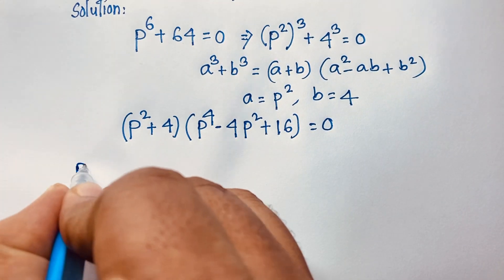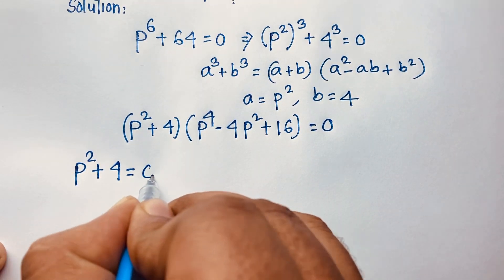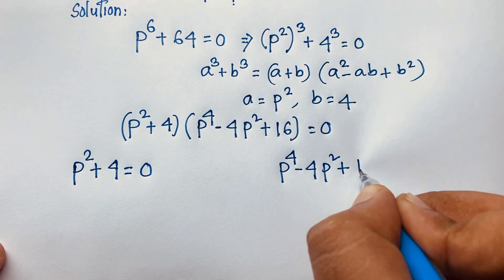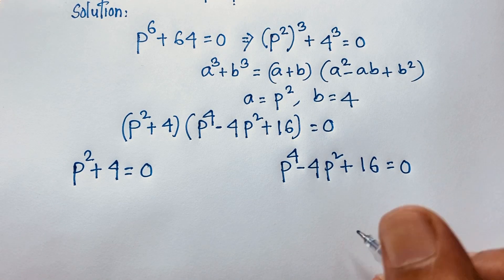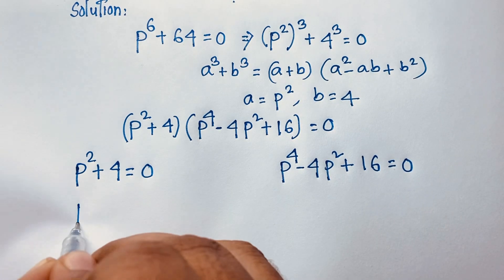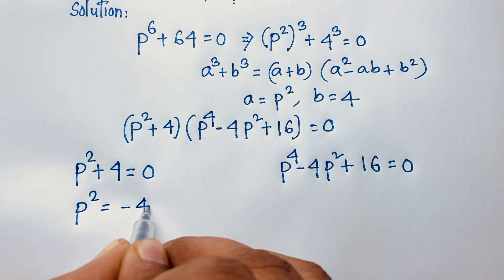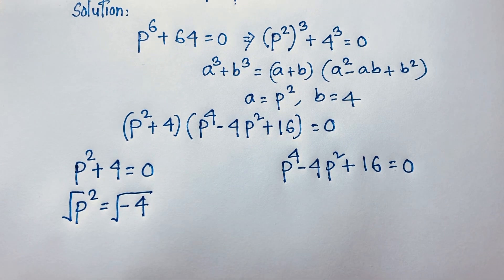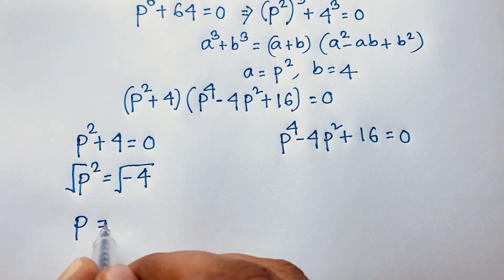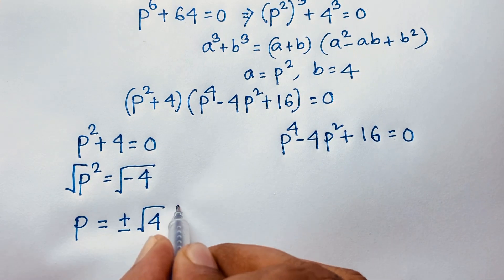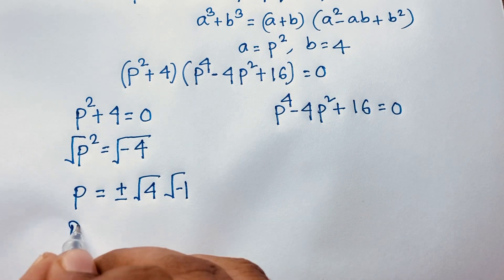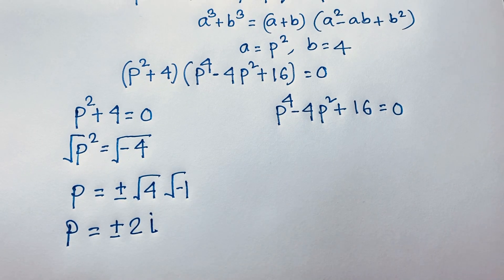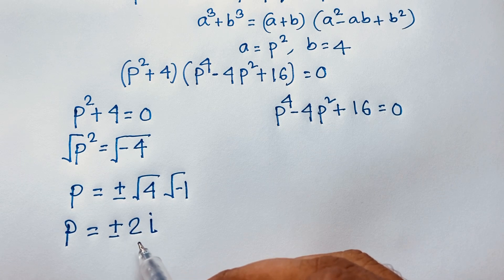For Case 1: p squared plus 4 equals zero, so p squared equals negative 4. Taking the square root of both sides, p equals plus or minus the square root of 4 times the square root of negative 1. So p equals plus or minus 2i. Both are complex solutions — there is no real solution here.